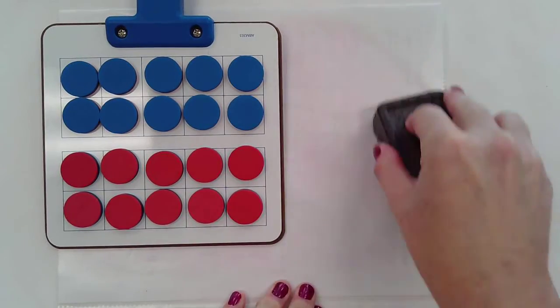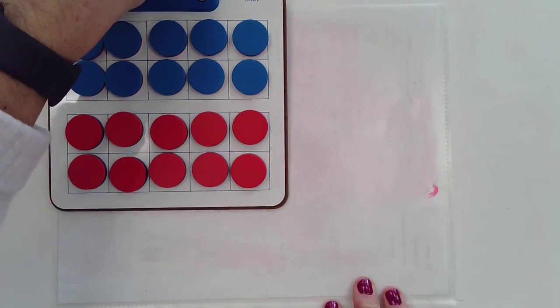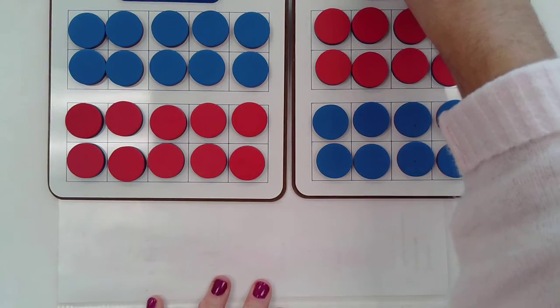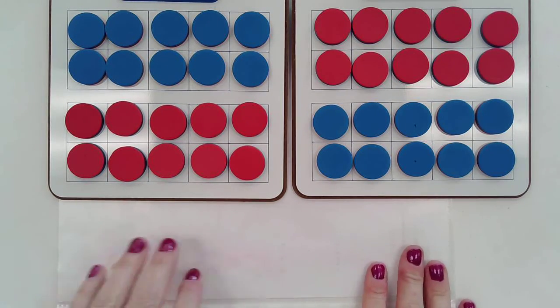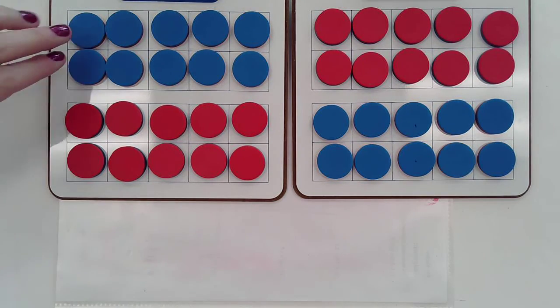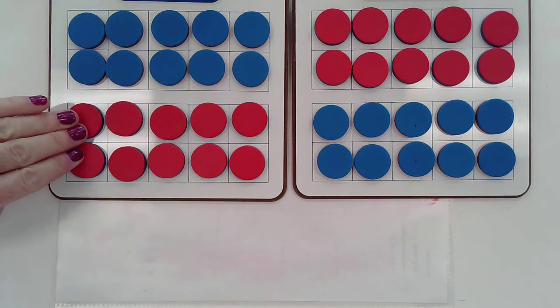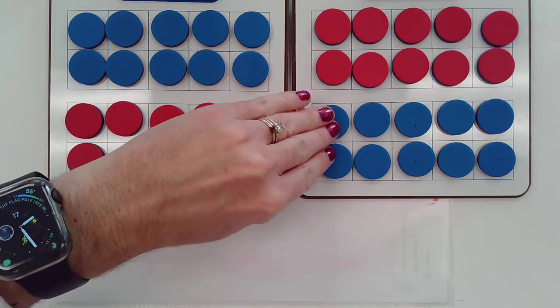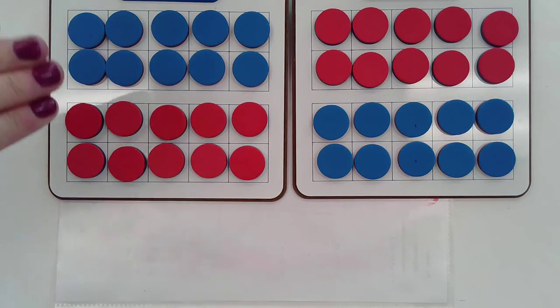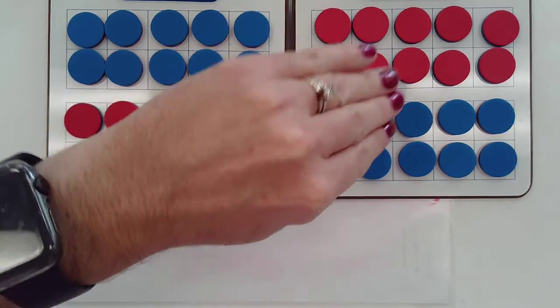All right, let's look at one last number here. So this time I have a few more ten frames here. So I have one ten frame, two ten frame, three ten frame, four ten frame. Or I can count it by tens: ten, twenty, thirty, forty.